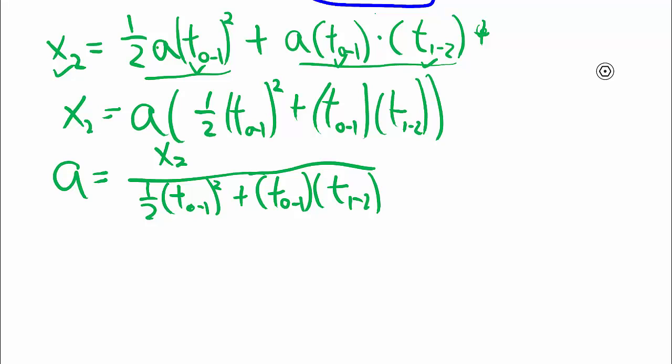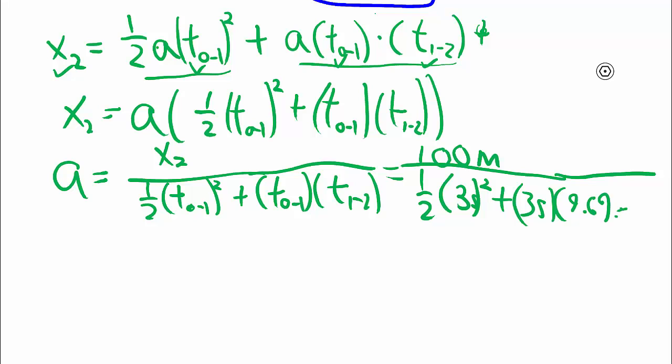Good practice to isolate the variable first before you put in all the numbers. x₂ as we know is 100 meters. One-half and then we have three seconds squared plus three seconds. Oops, don't forget the units.